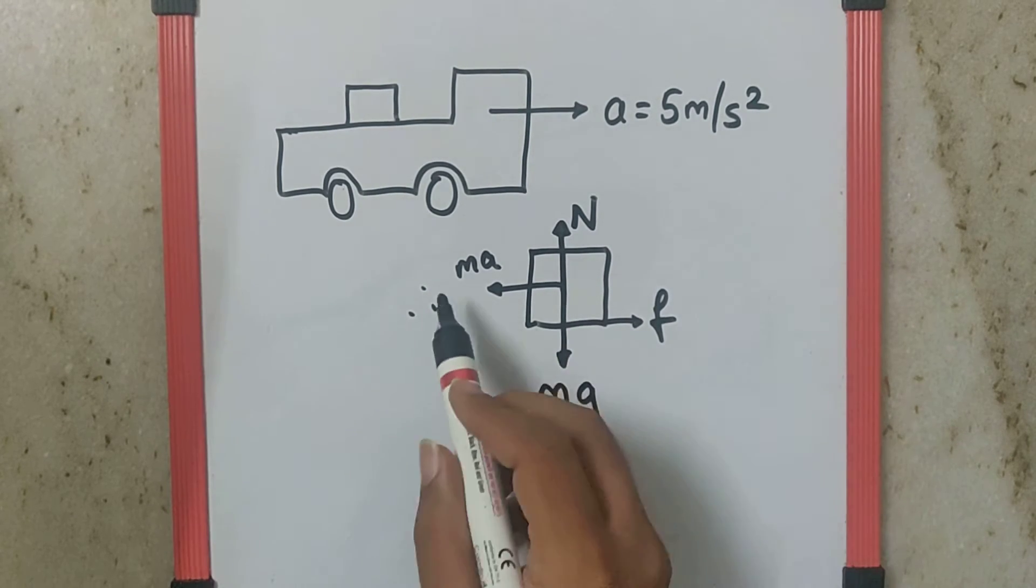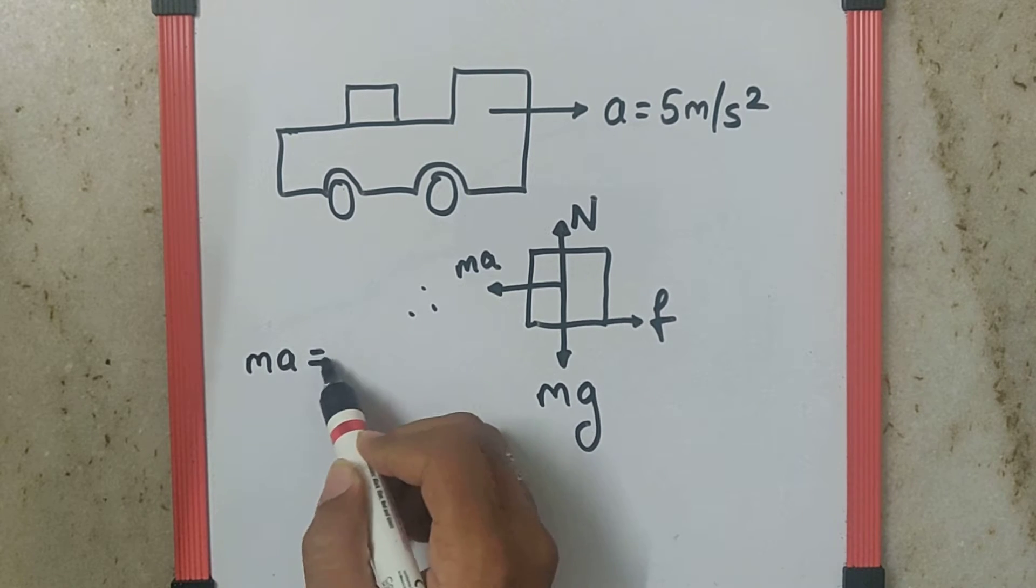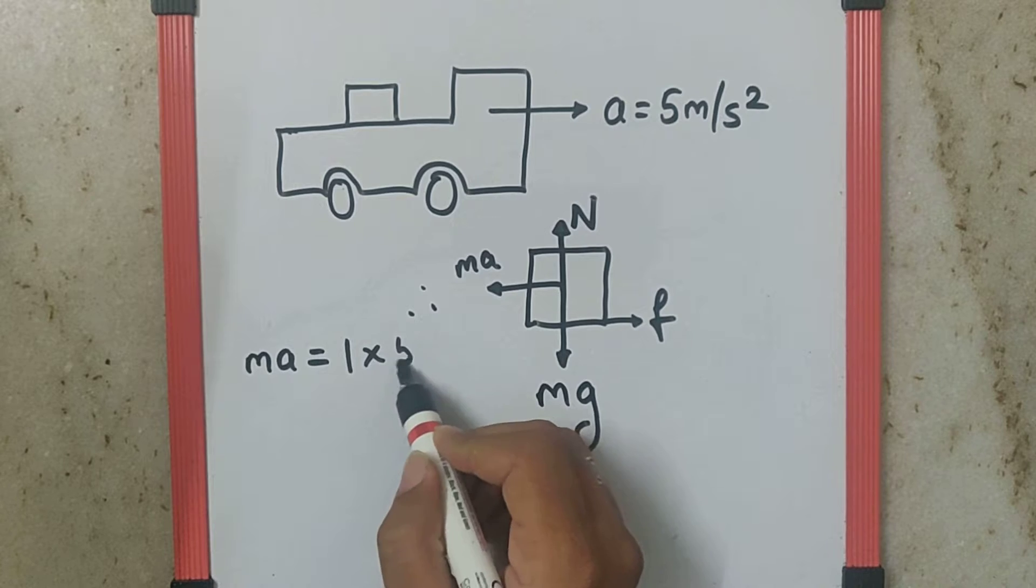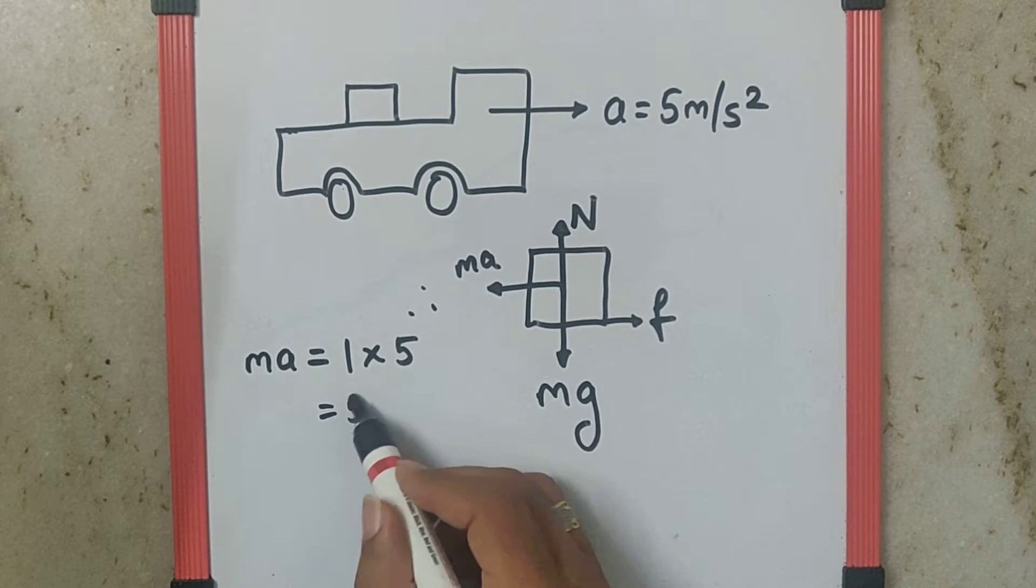To calculate the value of ma, it's very simple because mass has been given as 1 kg and the acceleration is 5 m/s². That makes ma equal to 5N.